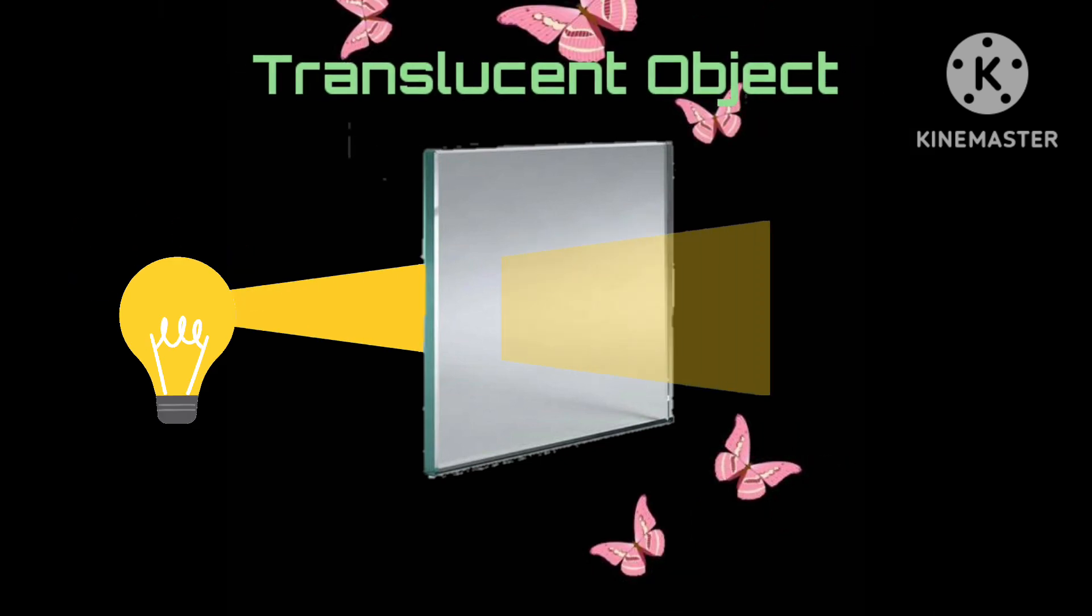Next is translucent object. An object which allows partial passage to light is called a translucent object. We can see through a translucent object but the vision would be murky.